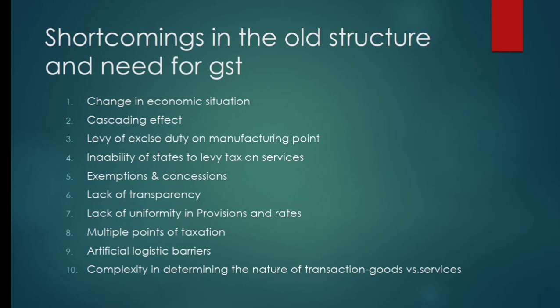The eighth shortcoming is multiple points of taxation. Under the current system, there were multiple points of taxation — excise duty had to be paid separately at the time of manufacturing, and separate taxes were applicable for interstate and intrastate sales. This caused multiple points of taxation and increased the cascading effect, which was a shortcoming of the old tax structure.